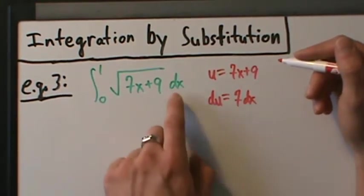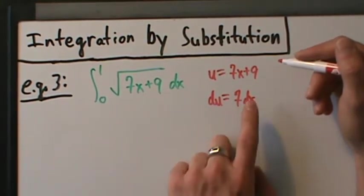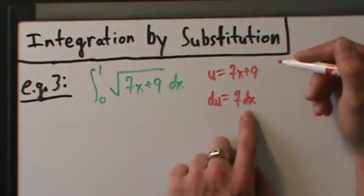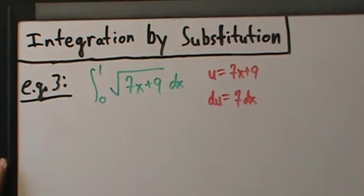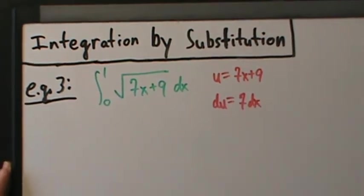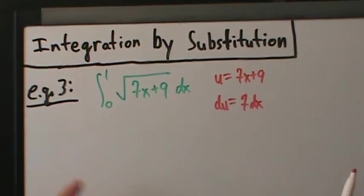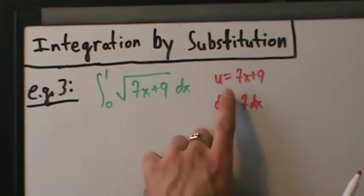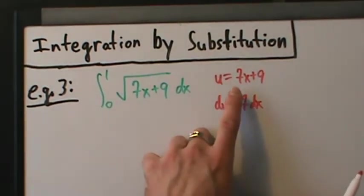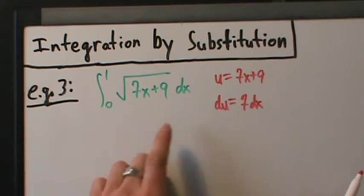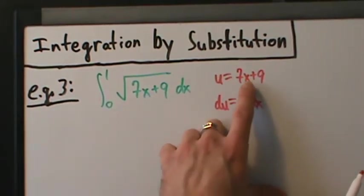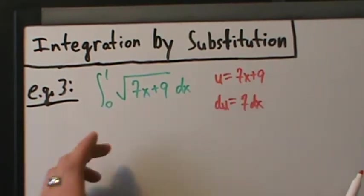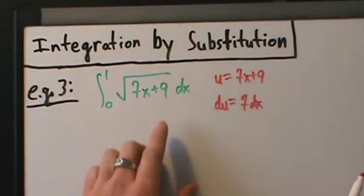The derivative is just 7, but the differential is 7 dx — we have to have that dx. Going back to picking u: if we take a derivative of 7x + 9 we just get 7; we don't have another 7 out here, we just have a 1.